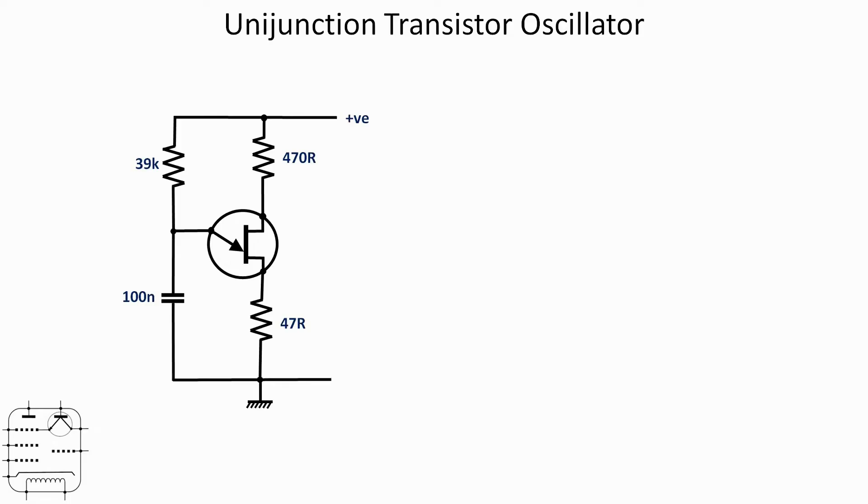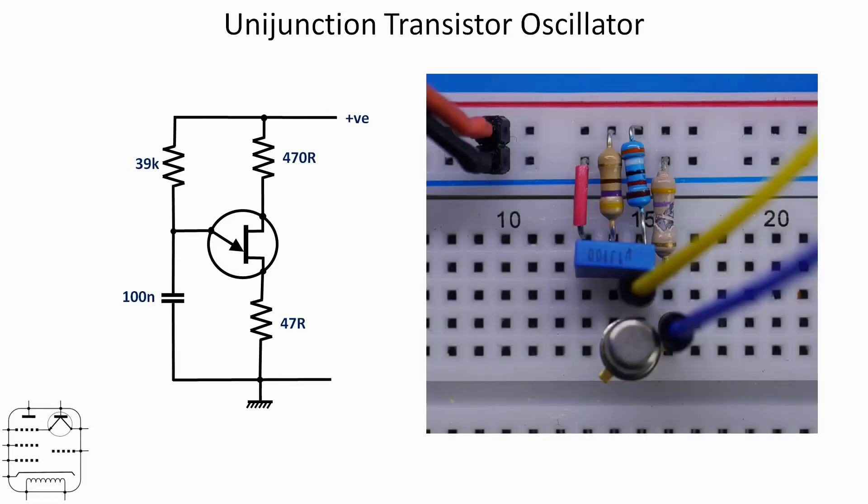Here's the circuit. It's incredibly simple. Unijunction transistors have the unique ability to produce a sawtooth or a ramp waveform if you like. Obviously a circuit as simple as that lays out on the breadboard very simply.